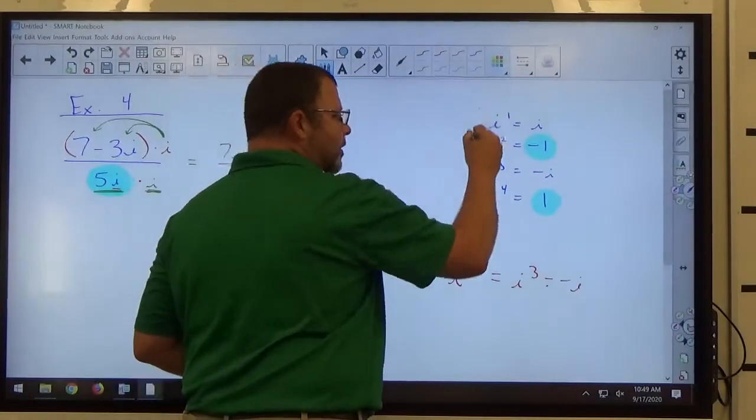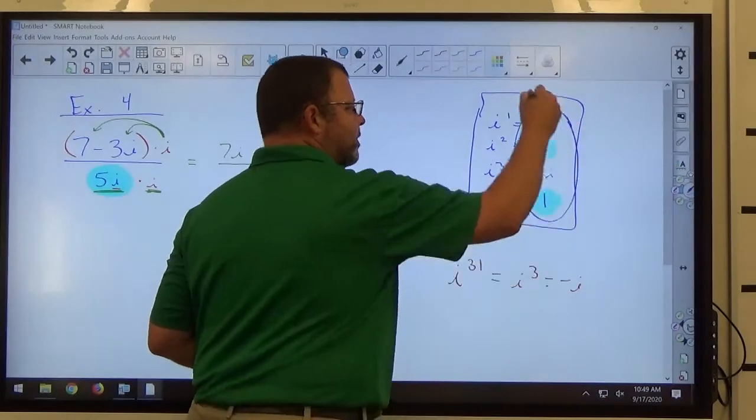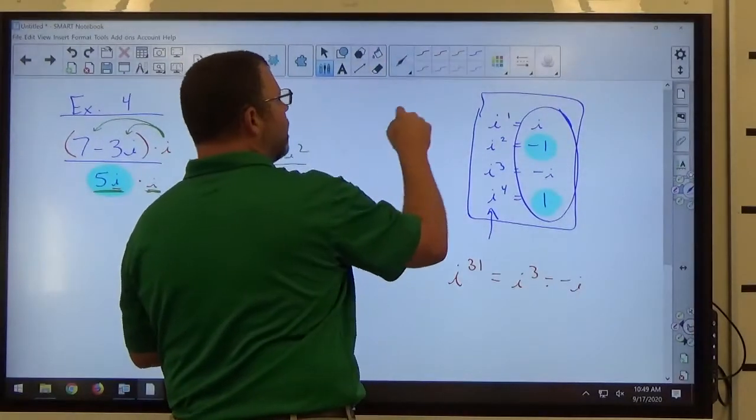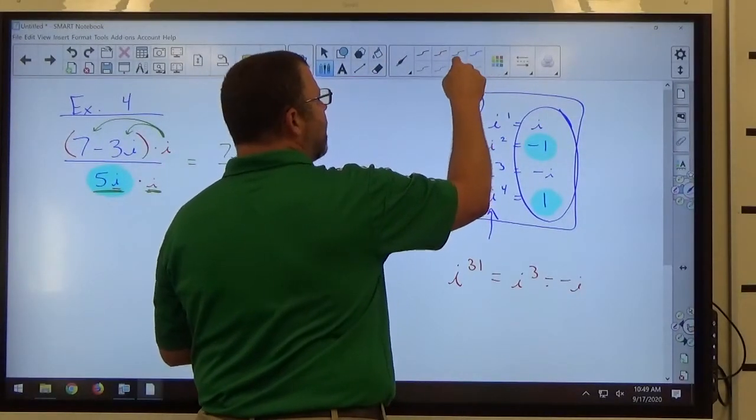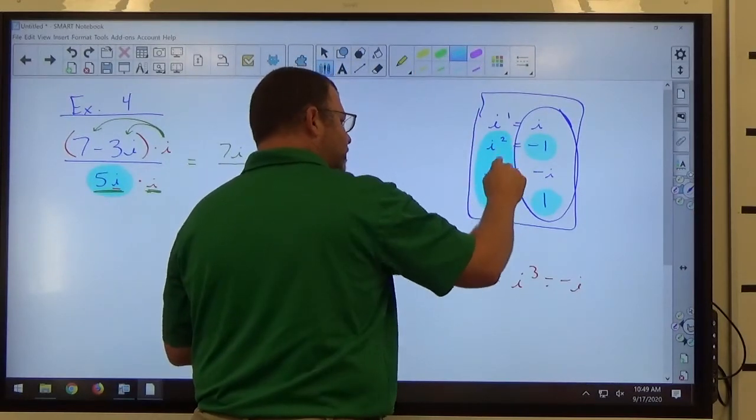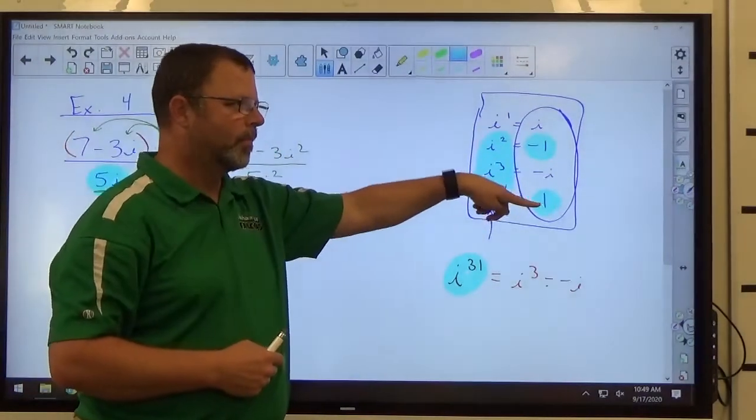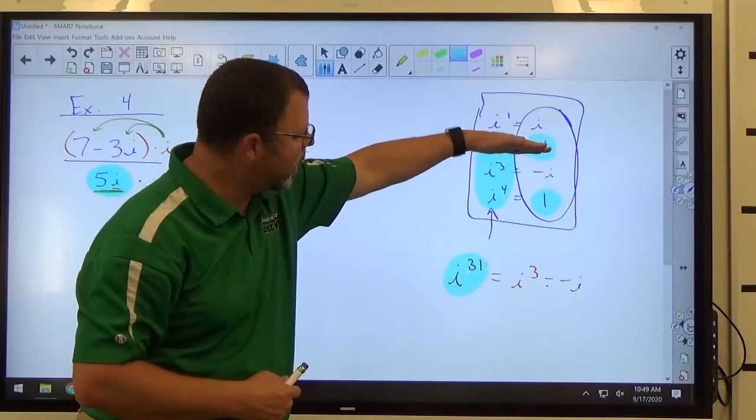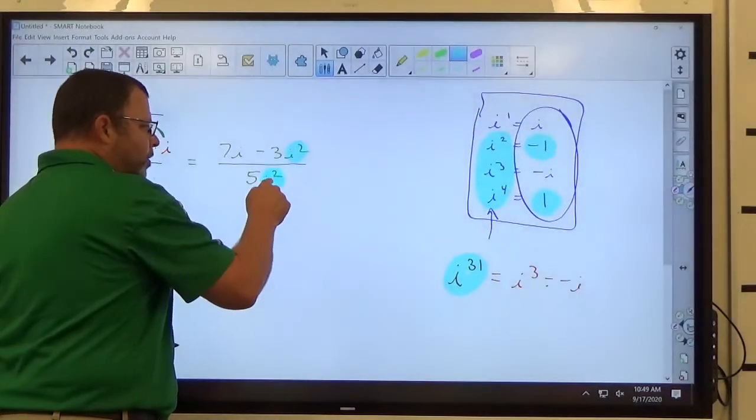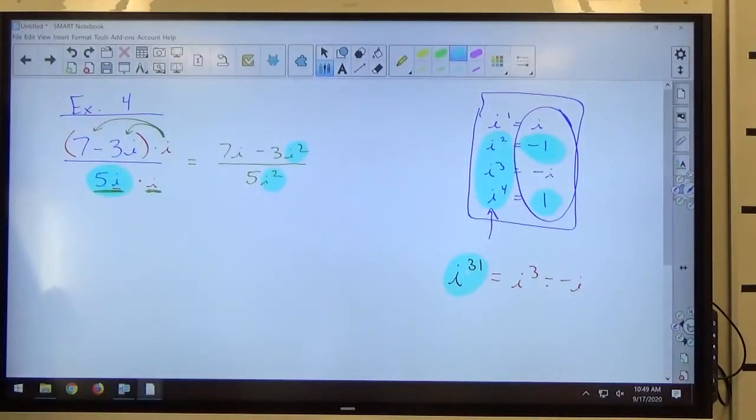Anytime you deal with i's, if it looks like this, it has to look like this. If you have i to a power, specifically not just any of those, specifically it looks like any of these, if it's i to a power bigger than one, it has to be fixed. I don't want any of these structures here. I want i or negative 1 or negative i or positive 1. That's all I want. So I don't want i squared. I want negative 1, because that's what i squared equals, and it's more simple.